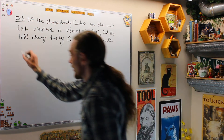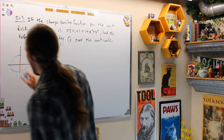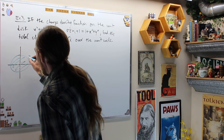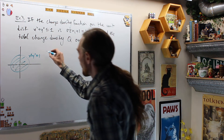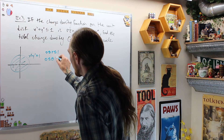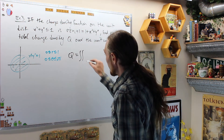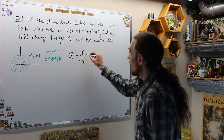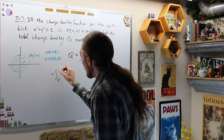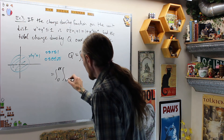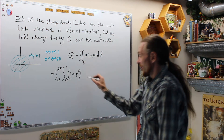Sketch the region first: we have the unit circle x² + y² ≤ 1, the unit disc. The bounds are 0 ≤ r ≤ 1 and 0 ≤ θ ≤ 2π — a full revolution. The total charge is the double integral over D of my charge density. In polar coordinates that becomes the integral from 0 to 2π, the integral from 0 to 1, of (1 + r²)·r dr dθ.